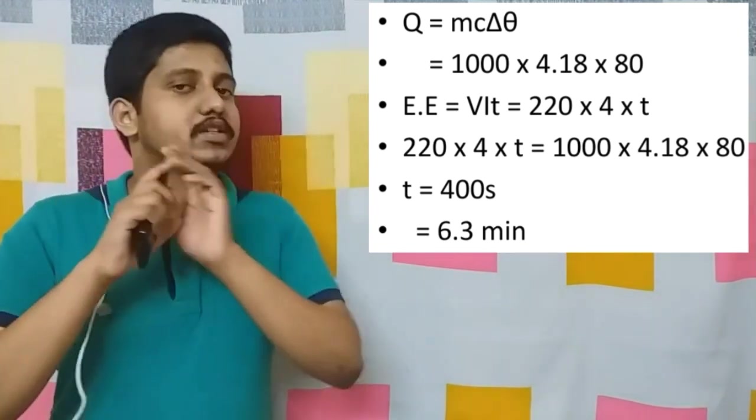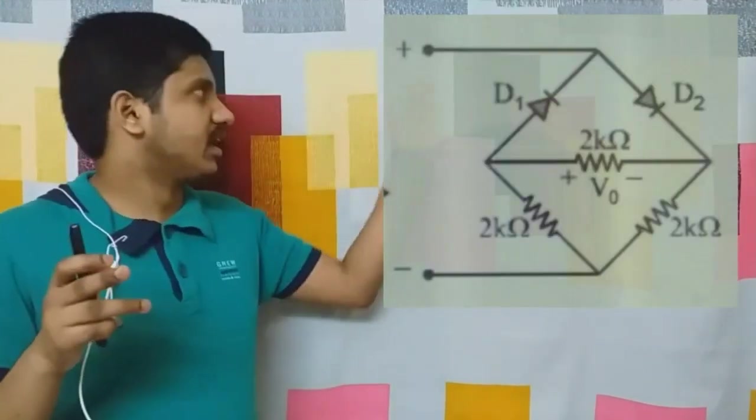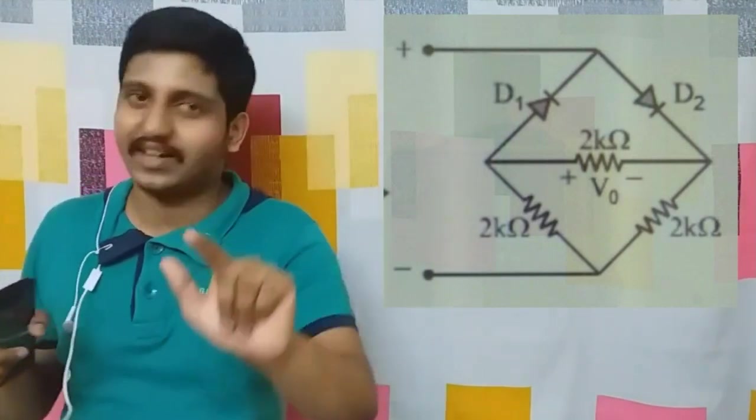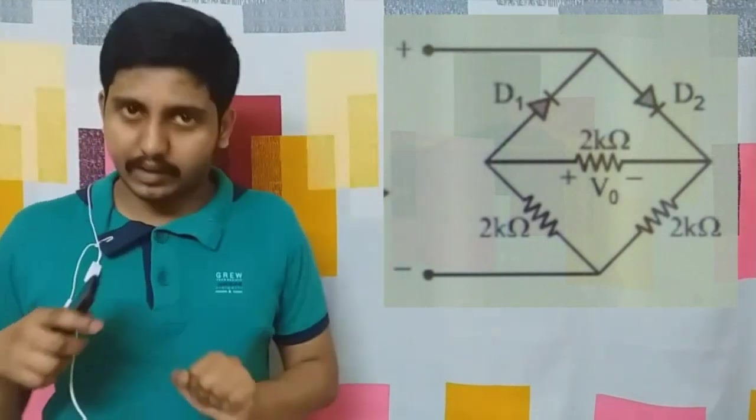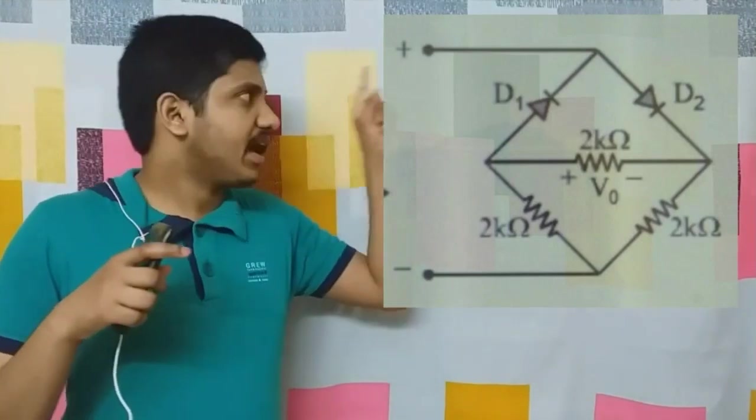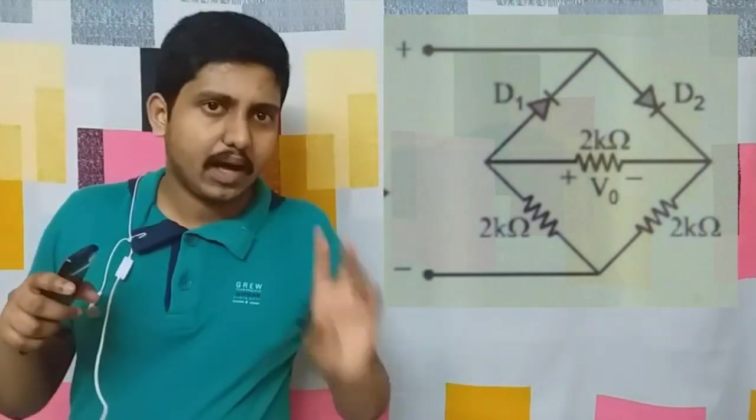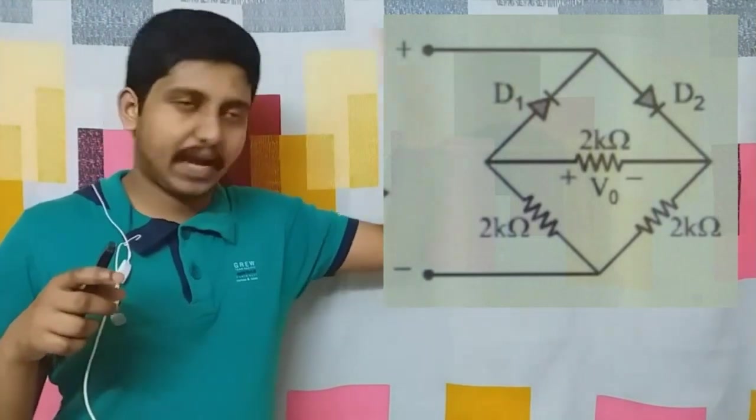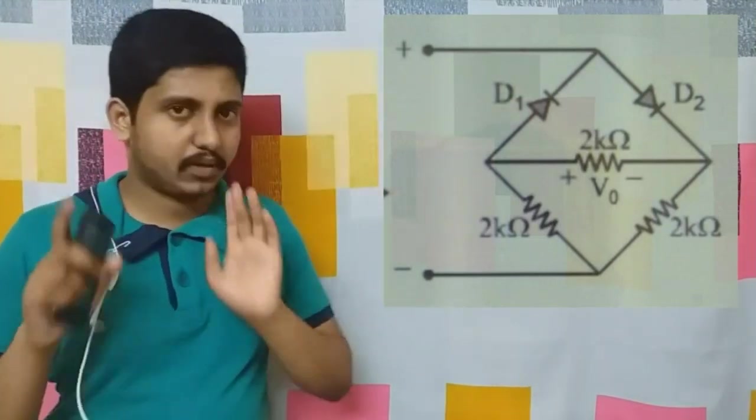Now let's go to our next question. This is a question which was asked to me as a doubt. It's a very easy question once you understand the concept. This is about semiconductors and current electricity, specifically about P-N junction diodes. The triangle with a line represents the diode, where the line is the N part.